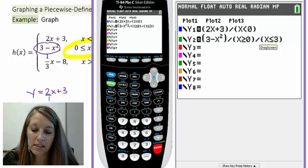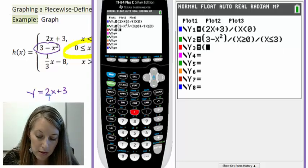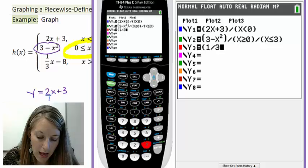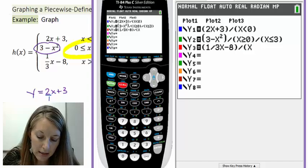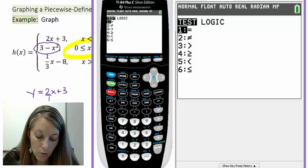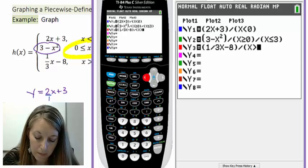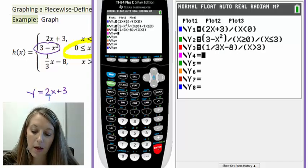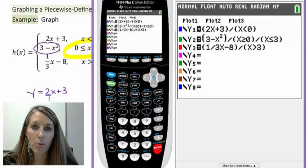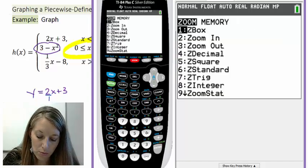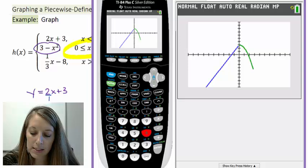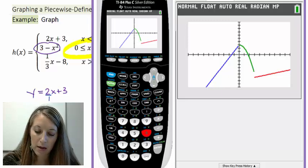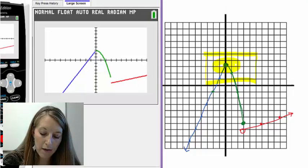So the first is the piece as it's defined, and then it's over each interval as it's defined that way. My third piece was 1 third x minus 8, and it was defined over the interval when x is greater than 3. And so this graph here should give me the graph of what we have found by hand. So zoom 6 to give us our standard window. There's my first linear piece in blue. My second quadratic piece in green. And my third linear piece in red.